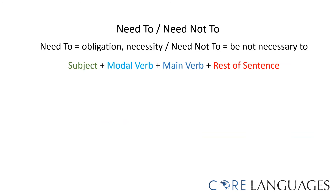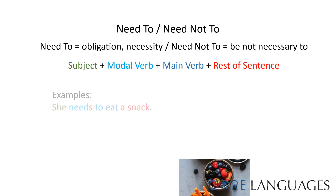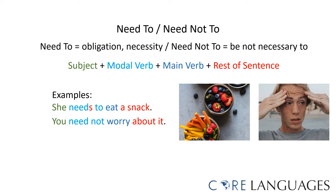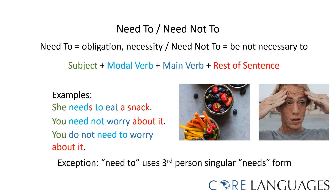The semi-modal verb 'need to' is used to express obligation or necessity. 'Need not to' is used to express that it is not necessary to do something. The word order is the same: subject, modal verb, main verb, and rest of the sentence. For example, she needs to eat a snack. Or, you need not worry about it. You could also say, you do not need to worry about it. Both forms of negation are possible with 'need to', and we need to remember that 'need to' uses the third person singular 'needs'.